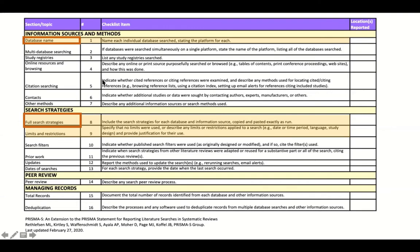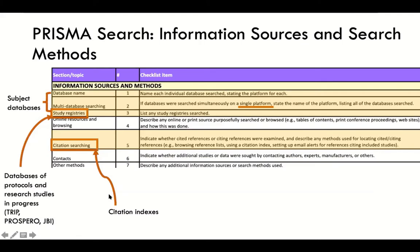There are a number of other issues that need to be fully reported. For example, if you have searched any registries — such as TRIP that we saw yesterday, Joanna Briggs Institute's database, Prospero, or any of the other databases where protocols are deposited as well as full studies — you do need to report those. Multi-database searching will be addressed when we talk about platforms in just a moment. Everything we're covering today speaks directly to an item somewhere in this PRISMA search extension. Citation searching is also covered briefly today in our citation indexes.